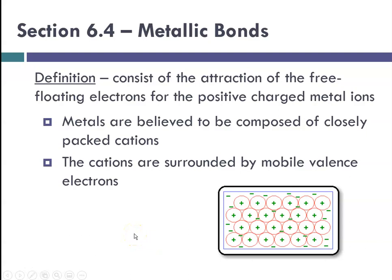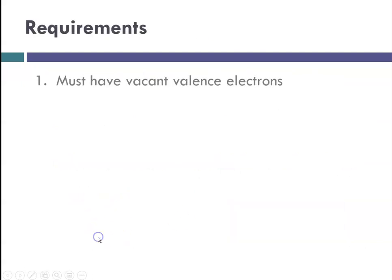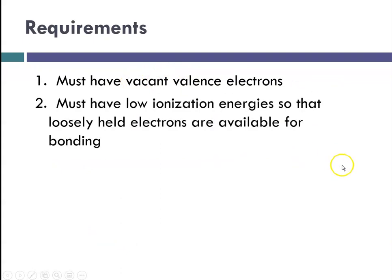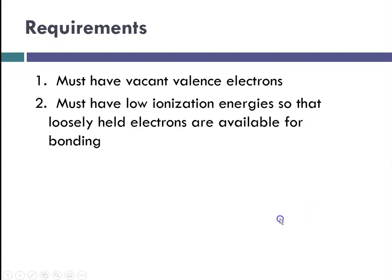The properties of metallic compounds, metals in general, can be explained due to this metallic bonding. The requirements, there must be vacant valence electrons. They must have low ionization energies so that these loosely held electrons are available for bonding. This mobile electron situation is what accounts for this so-called floating sea of electrons. Whenever you hear sea of electrons, you say, ah, that must be metallic bonding.